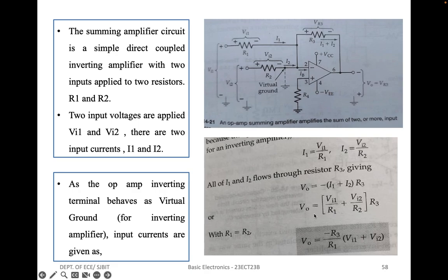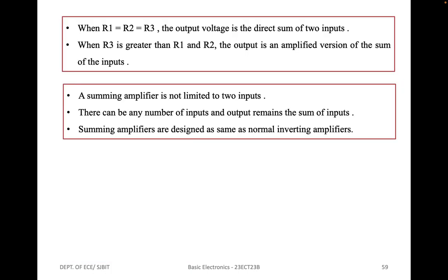The output voltage can be written as: I1 replaced by VI1/R1 plus VI2/R2, multiplied by R3. With R1 equal to R2, we can write the output voltage as minus R3/R1 into (VI1 plus VI2). When R3 equals R1 equals R2, that is all resistors are equal, the output voltage is the direct inverted sum of the two inputs. When R3 is greater than R1 and R2, the output is an amplified version of the sum of the inputs.